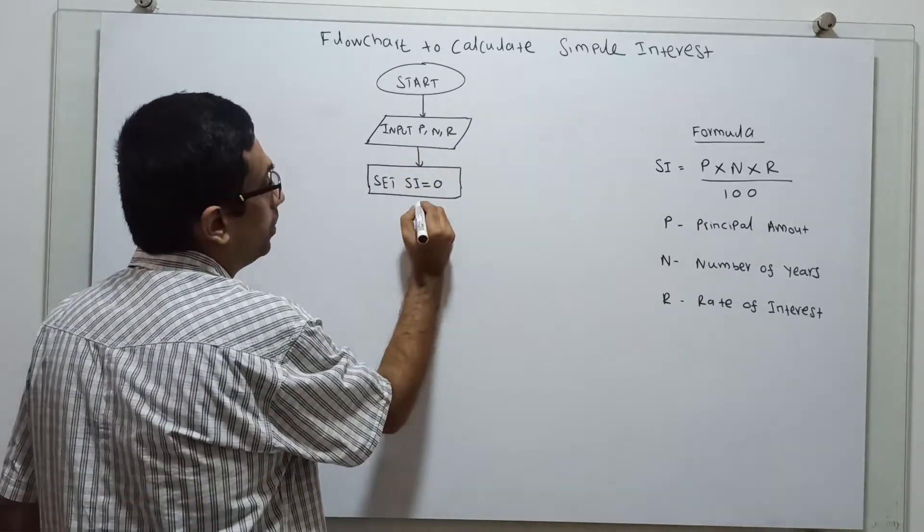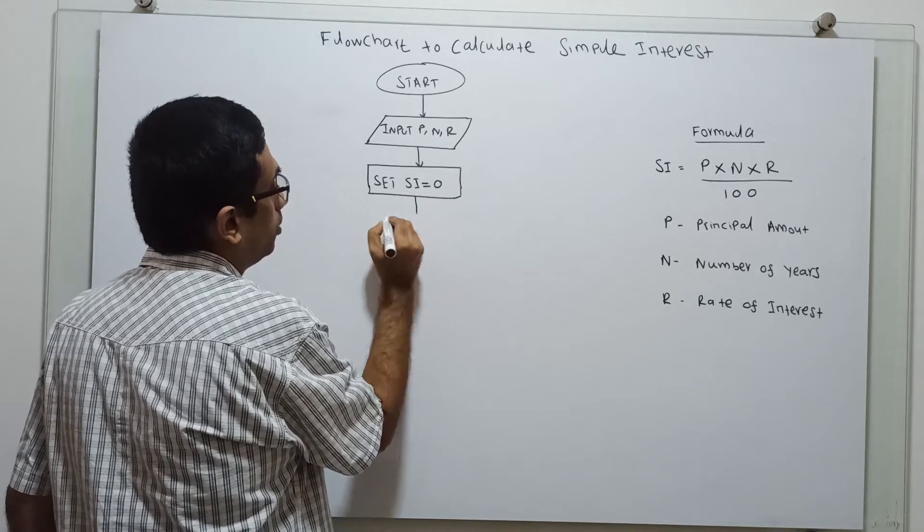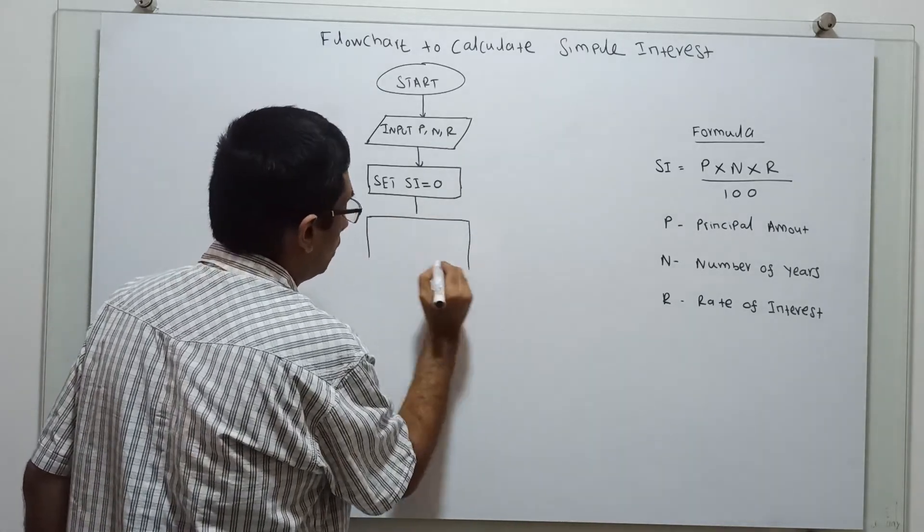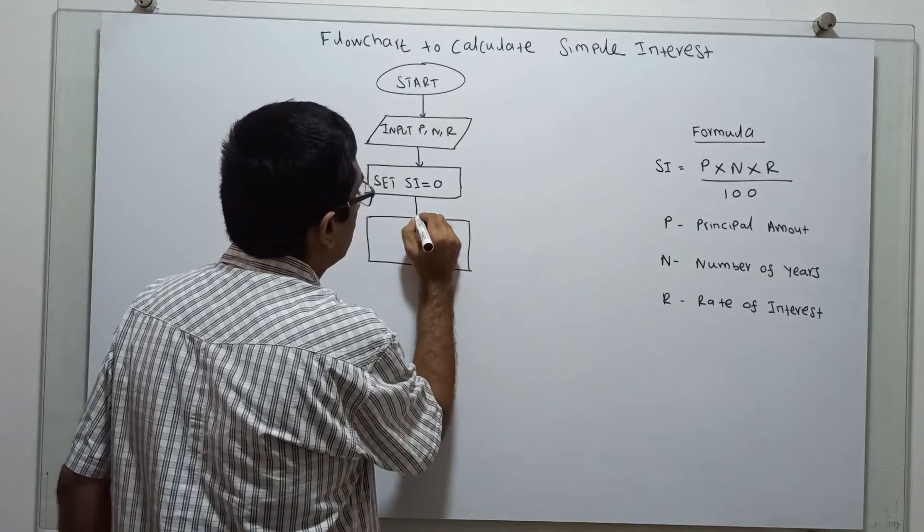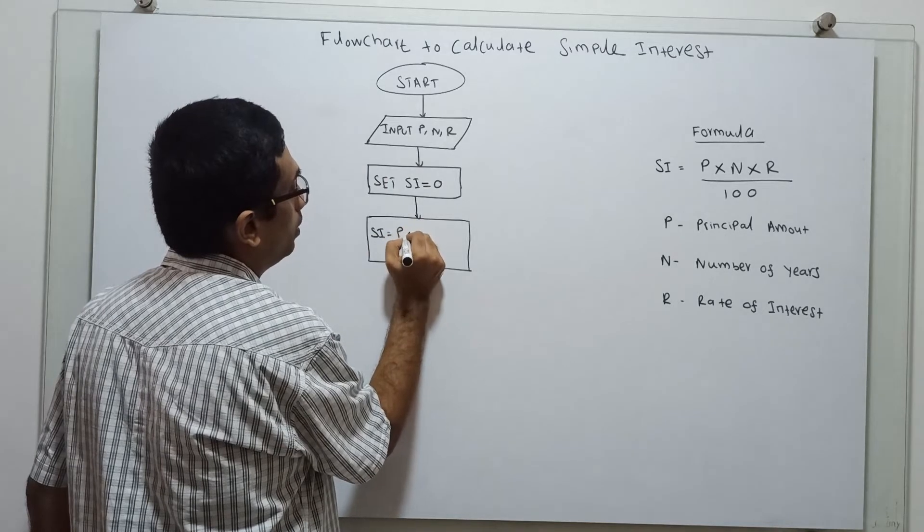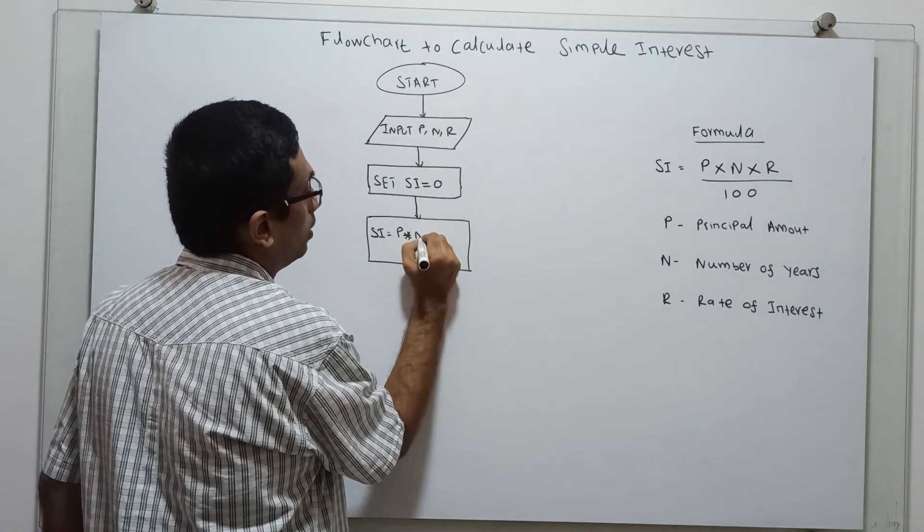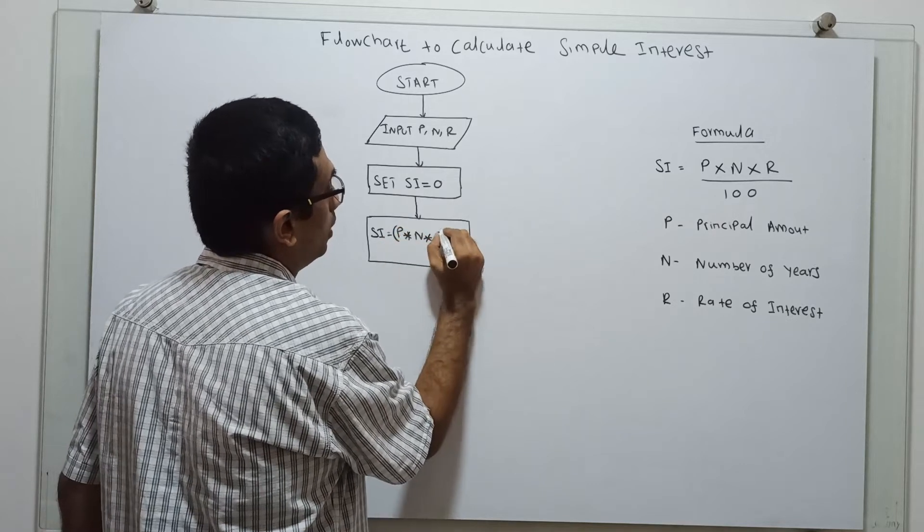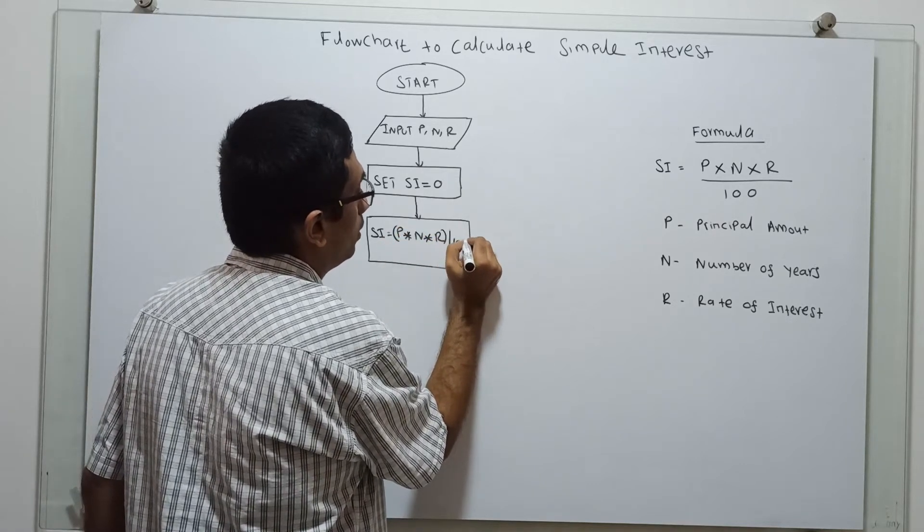Next, I am calculating the simple interest. First, SI equal to P star N star R, divided by 100.